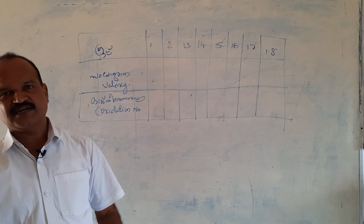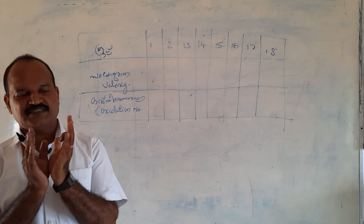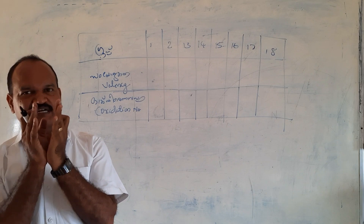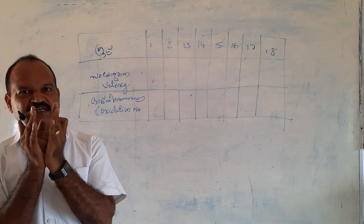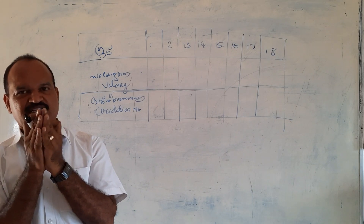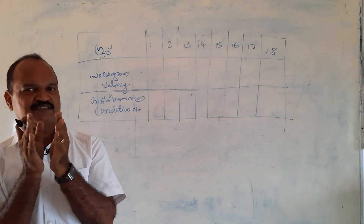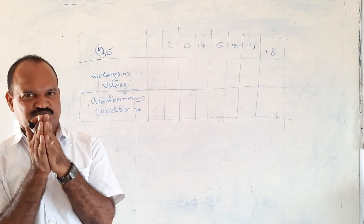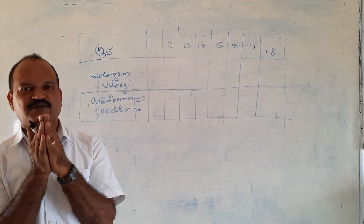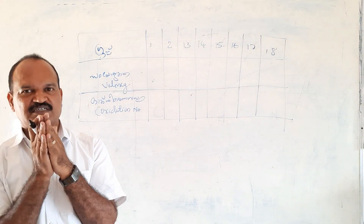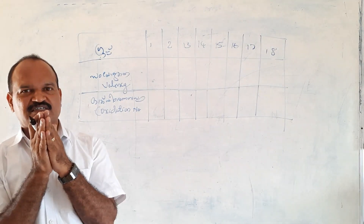What is the first one? In the first class, we use the same type of valence. What is the same type of valence?